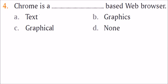Chrome is a graphical-based web browser. There are web browsers of different types — text-based and graphical. Chrome is graphical, so the answer is C. Other examples of web browsers include Internet Explorer, Safari, Opera, and Firefox.